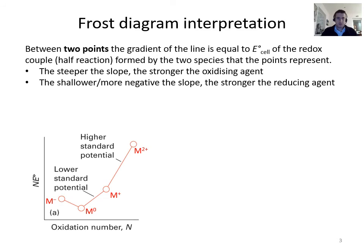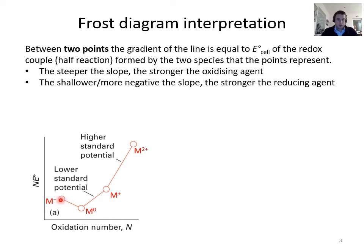For interpretation, the key point is that the gradient of a line between two points equals the standard reduction potential of that particular redox couple. For example, the gradient between two points gives the standard reduction potential for M²⁺ + e⁻ → M⁺. You can immediately see that a steeper, more positive gradient means a more positive standard reduction potential, and a downward slope corresponds to a negative reduction potential.